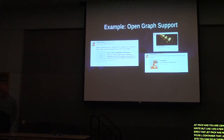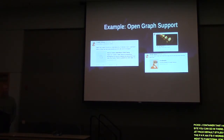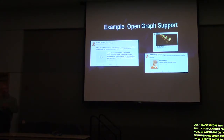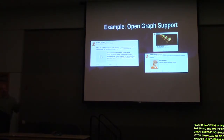One example is Open Graph support. I started using the 2017 theme a few months ago, and I noticed on Twitter that my featured image wasn't showing up on my tweets. The fix was to add Open Graph support in functions.php. I added code that displays my featured image and excerpt if available in the post. If there's no featured image, it displays my site icon instead. That way my tweets and Facebook posts would look a little prettier.